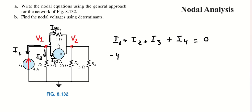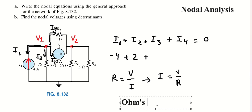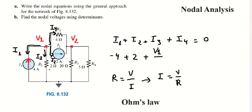For I number two, the current flows in this direction, so we put positive two. For I number three, we can see it goes through a resistor, so by Ohm's Law, I number three equals V number one divided by two.